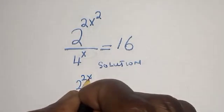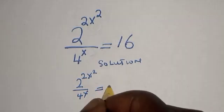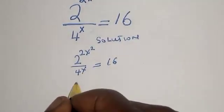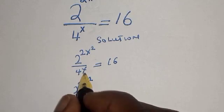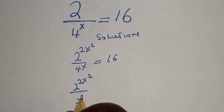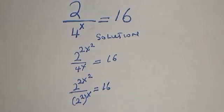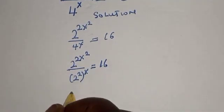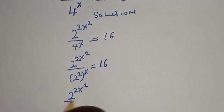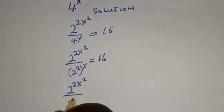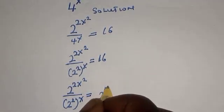We start with: 2 raised to power 2s squared, divided by 4 raised to power s, is equal to 16. We rewrite 4 raised to power s as 2 raised to power 2 raised to power s. So this becomes 2 raised to power 2s squared, divided by 2 raised to power 2 raised to power s, is equal to 16, which is 2 raised to power 4.